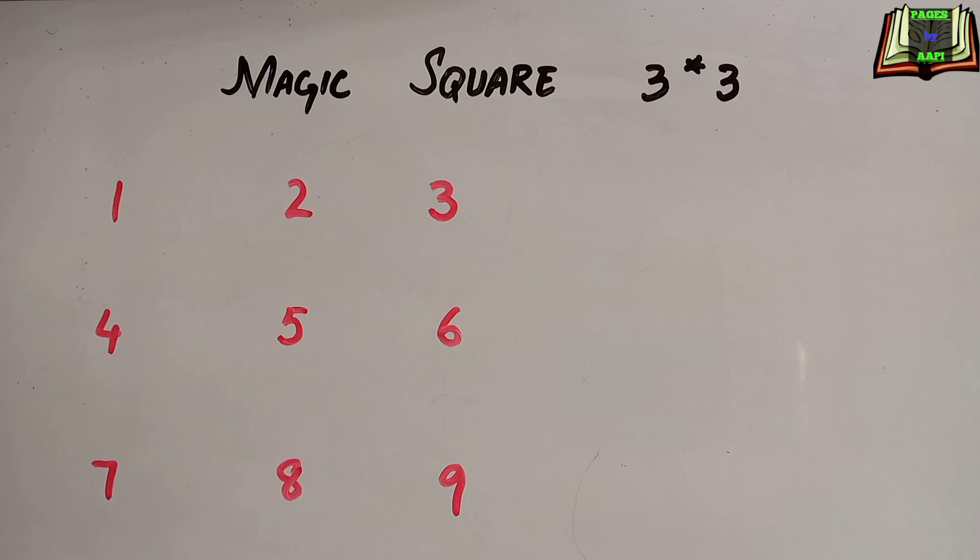Suppose we have numbers from 1 to 9 and we have to write each number in a square once only by making arrangement of the numbers so that every row, column, and diagonal sums up with the same number.